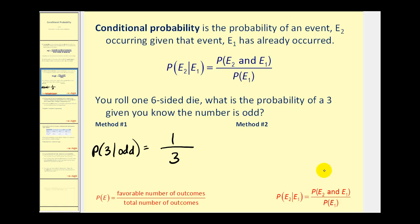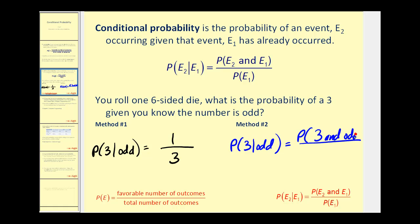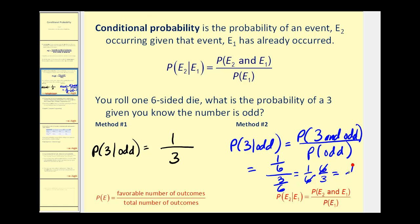Now using the conditional probability formula, we should get the same answer. This equals the probability of rolling a three and an odd, divided by the probability of rolling an odd. There's only one number that's a three and odd, so that's one-sixth divided by three-sixths. One-sixth divided by three-sixths is the same as one-sixth times six-thirds, and the result is the same: one-third.